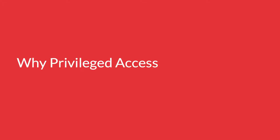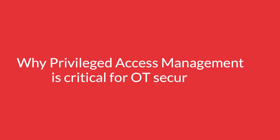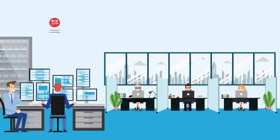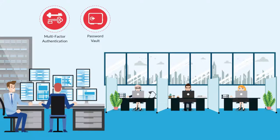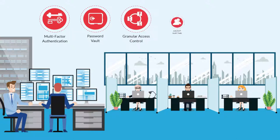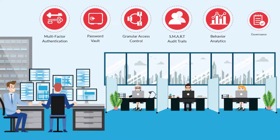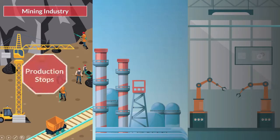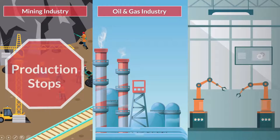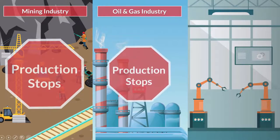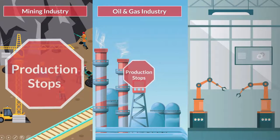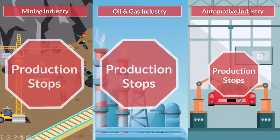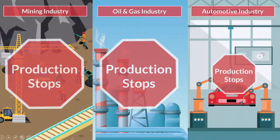Why is Privileged Access Management critical for OT security? Just like administrative operations, industrial operations face access control and authentication challenges. Critical systems face imminent data breach or unauthorized access risks from malefactors. One minor glitch in the production process due to unauthorized access to OT systems can put entire operations and the production process in the manufacturing plant on a standstill.